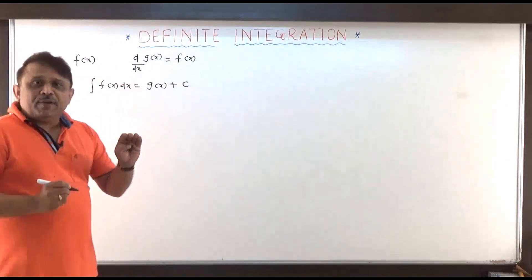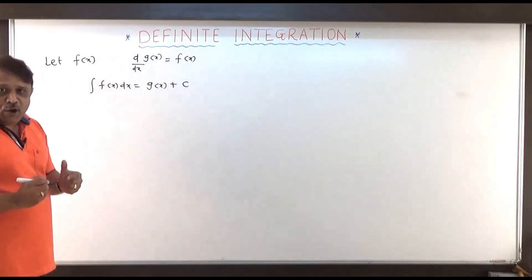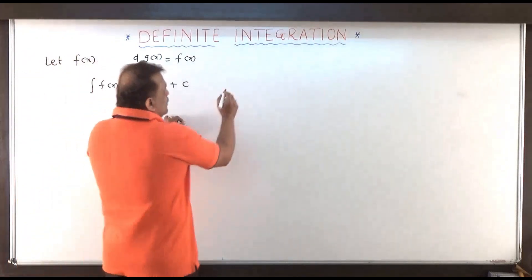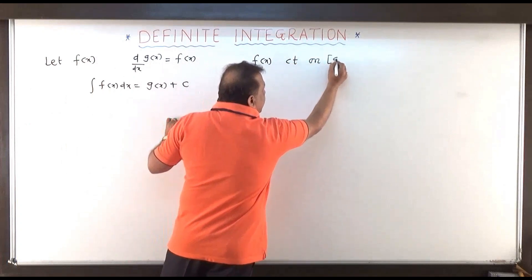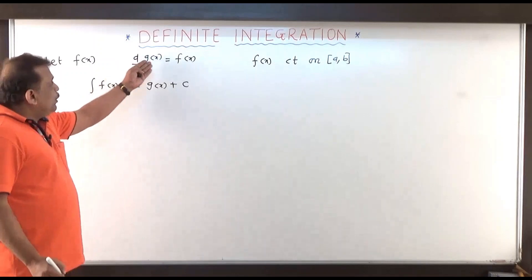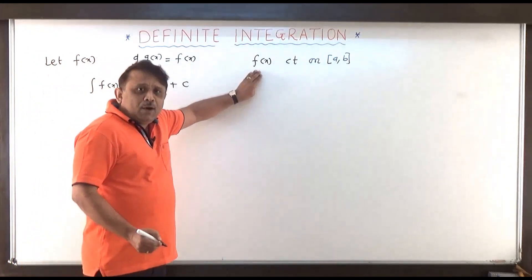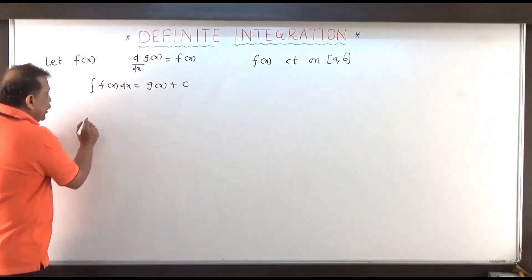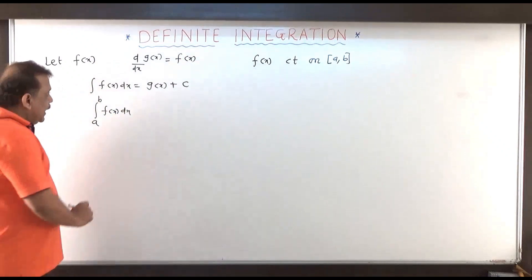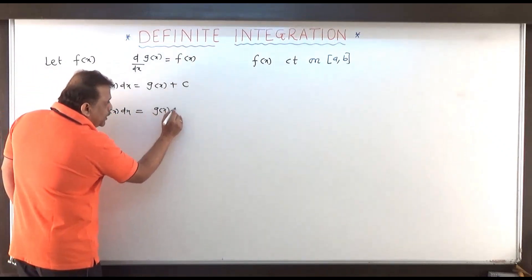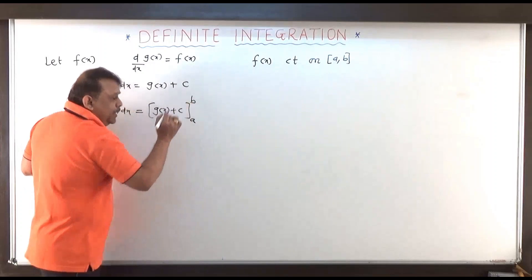So this is the definition of indefinite integration. Now what we do is, let us take function f of x which is continuous on the closed interval a b. Such that derivative of g of x is f of x. Then the definite integral of f of x over the interval a to b, we denote this by integral f of x dx from a to b, and it is defined to be g of x plus c, evaluated from a to b.